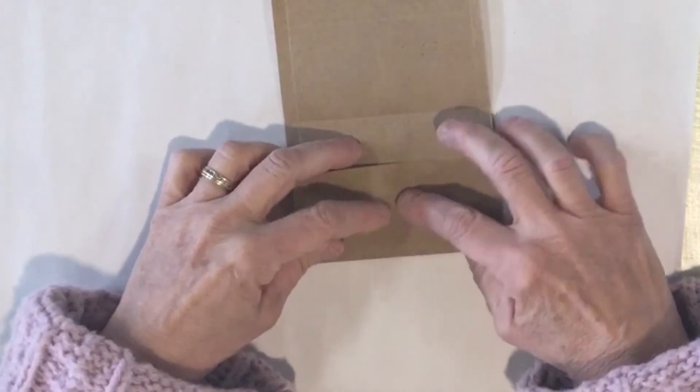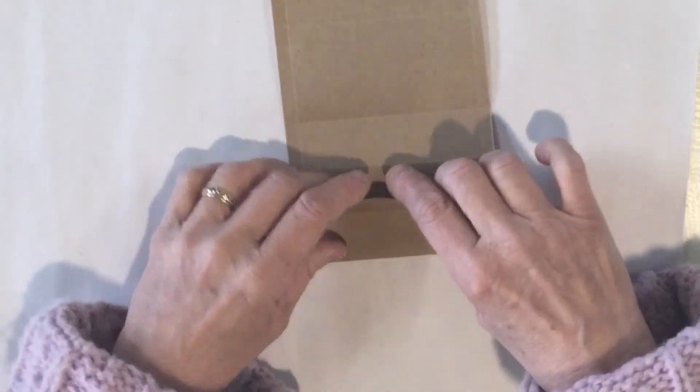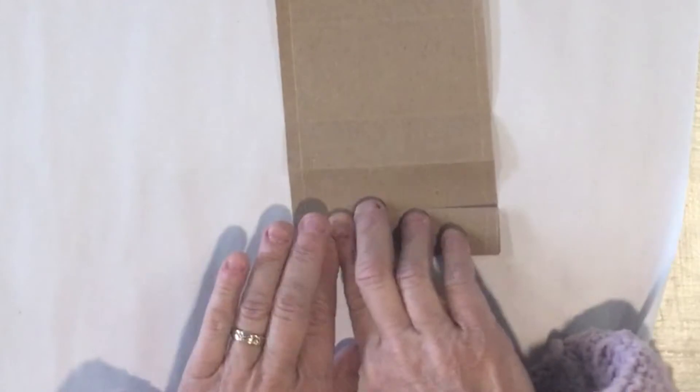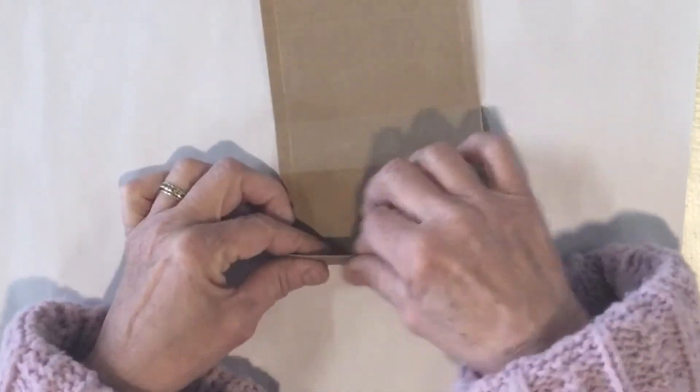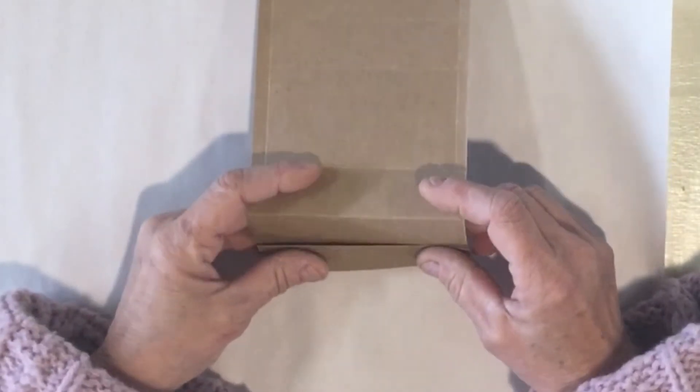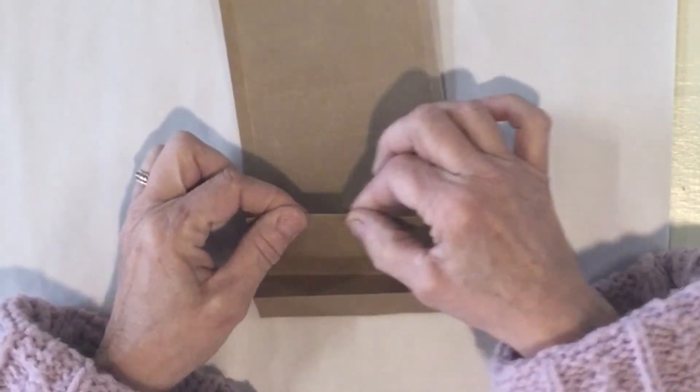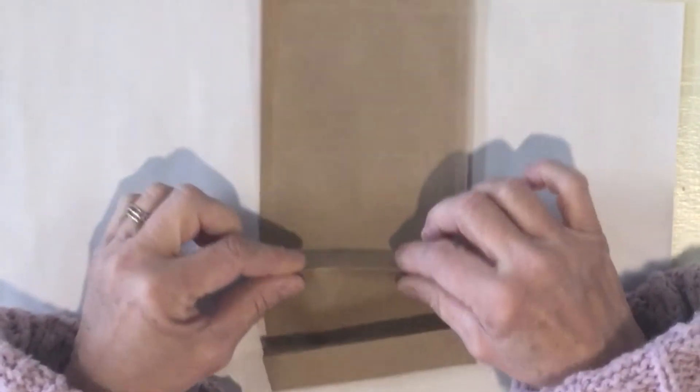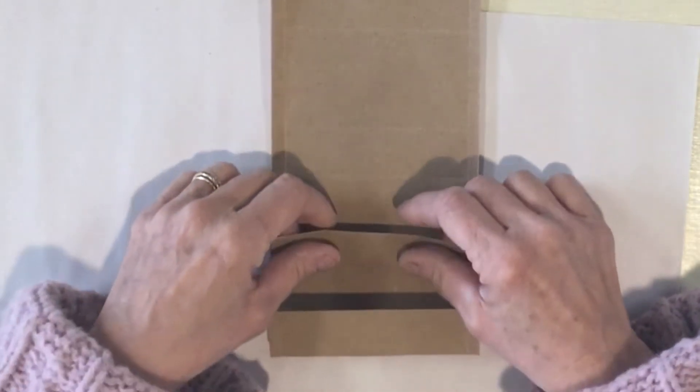Then I'm taking this one-inch score and bringing it down, and that's a mountain fold, so you have a nice flap right here and it's nice and tight. Let's move on to the next one. I'm going to fold this back as a mountain fold, and then the next one, the one inch, is going to be your valley fold.